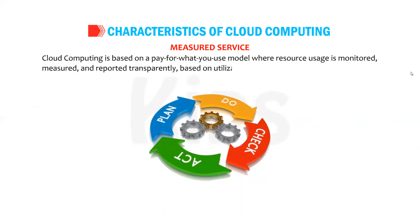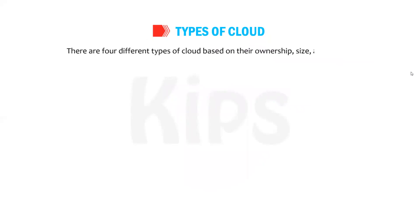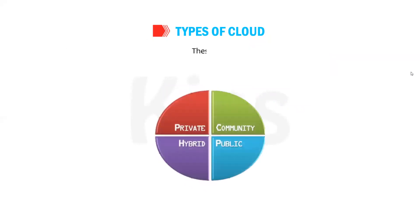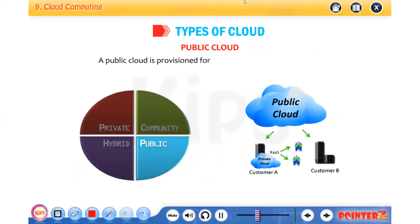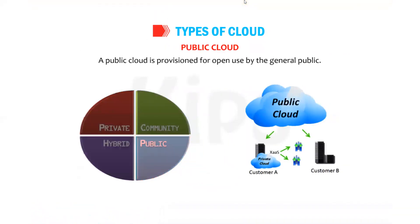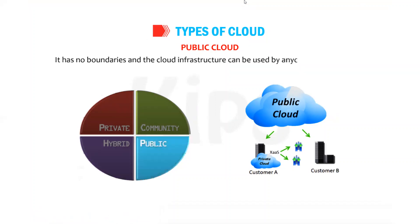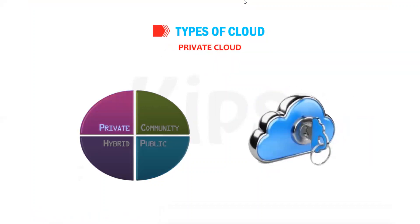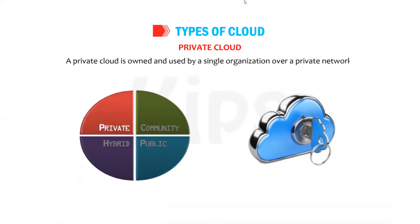Now let us learn about the types of cloud. There are four different types of cloud based on their ownership, size, and access. The first is the public cloud — a public cloud is provisioned for open use by the general public. It has no boundaries and the cloud infrastructure can be used by anyone, anywhere, over the internet.